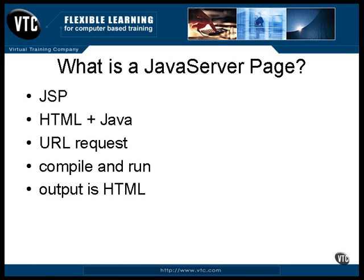This is the page that's returned to the requesting browser. It's possible to have the JSP precompiled and run the same class every time there's a request. Different pages could be produced by having the Java code read information from a database and include that information in the text of the web page.